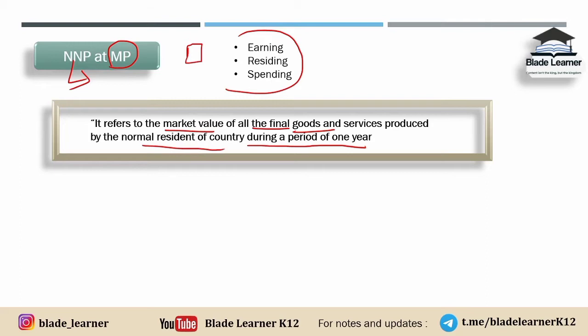So NNP at MP refers to the market value of all the final goods and services produced by the normal residents of the country. India ke context mein, India ke jitne bhi normal residents hain — within domestic territory ya abroad mein bhi — unke dwara jitni bhi final goods and services ka production kiya gaya hai, uski market value lenge to hum NNP at market price pe pohunch jaate hain. Final goods hi kyun lete hain? Kyunki intermediate goods lenge toh double counting ho jayegi — to avoid that, hum sirf final goods lete hain. Do check out the video on intermediate goods.